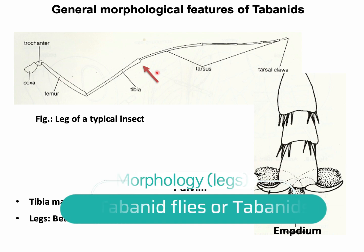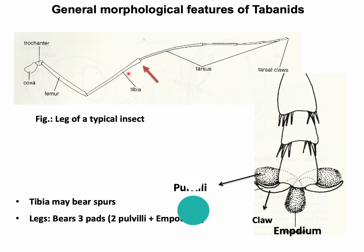The tibia spur on the leg also helps in the differentiation of different Tabanid genera. Legs bear three pairs of structures — two pulvillae and one empodium — at the end of the leg, which help to prevent slipping during landing or sitting on the host body.